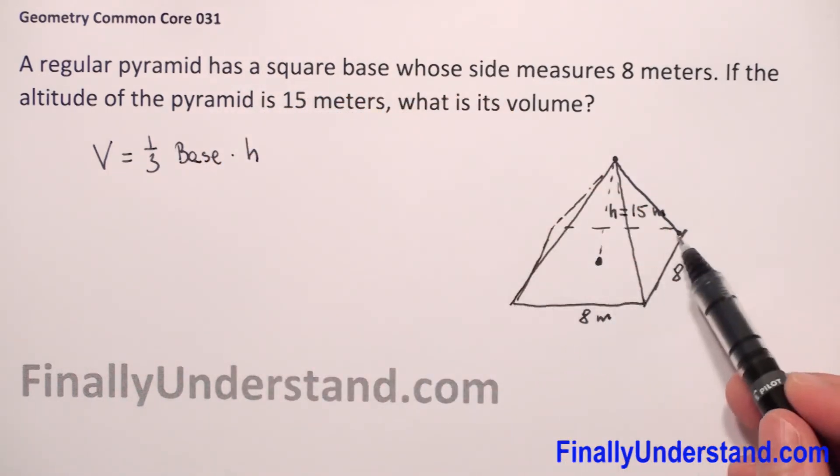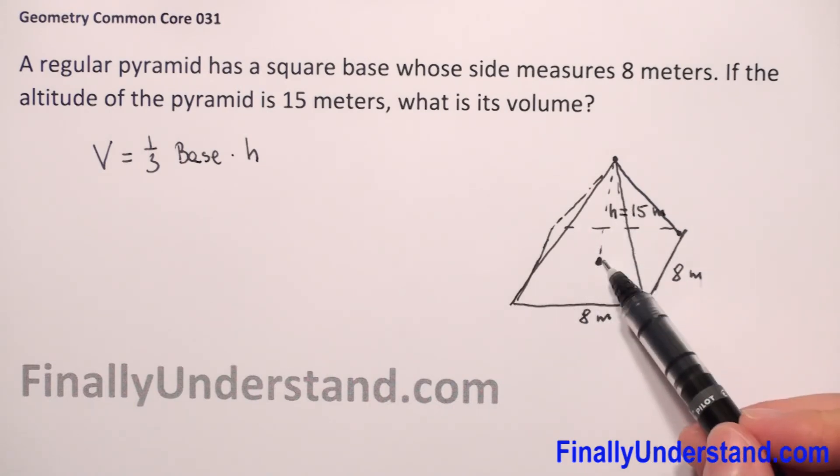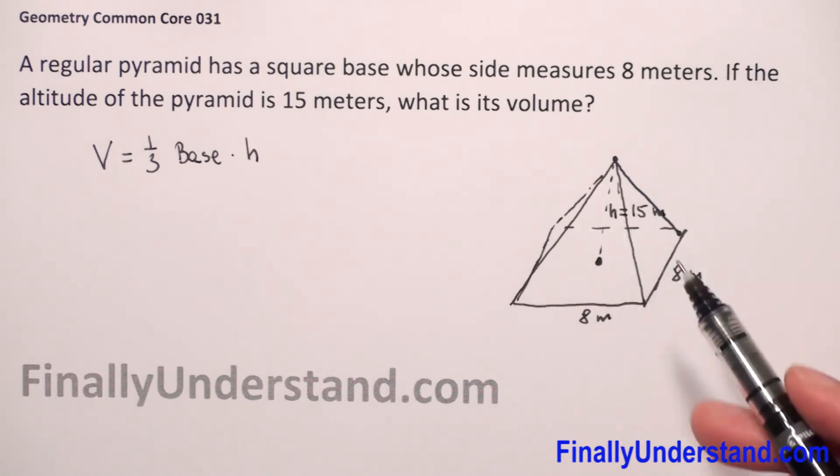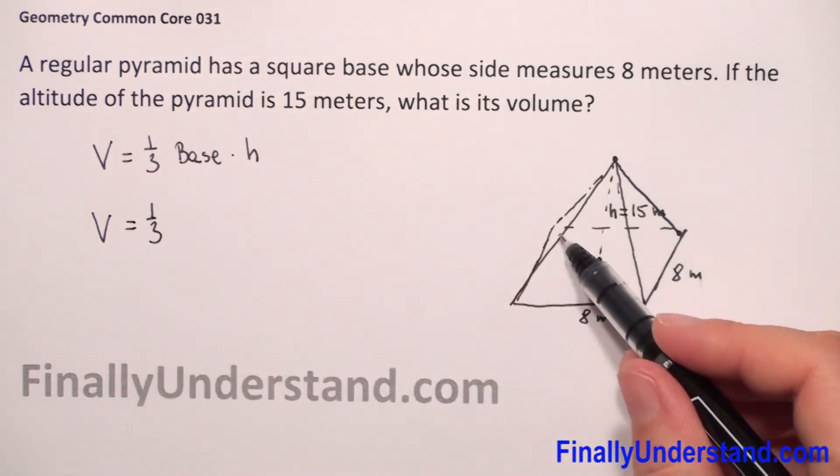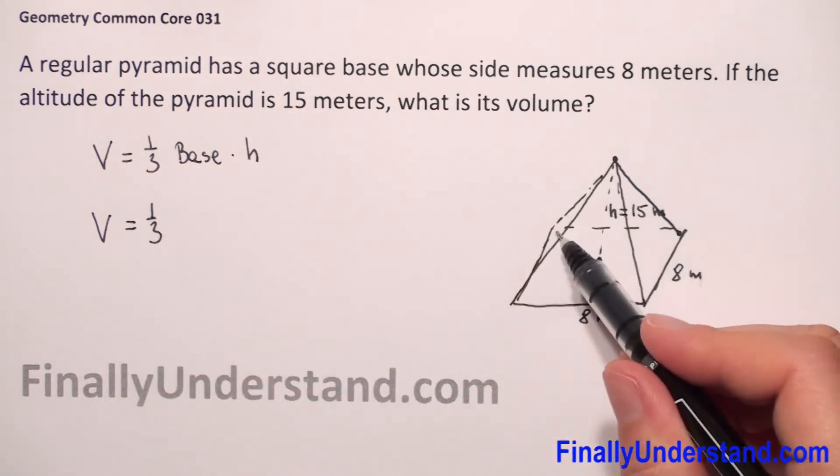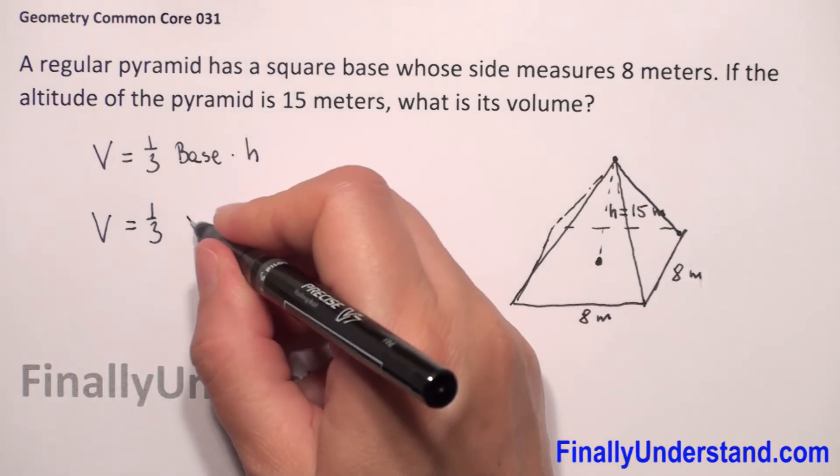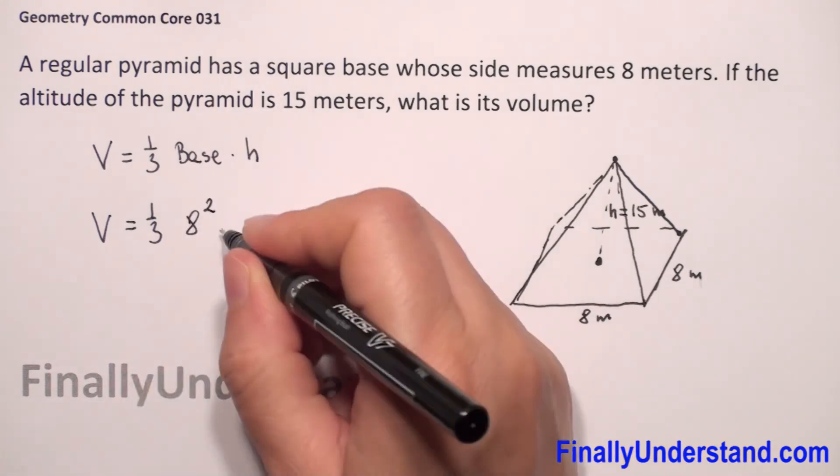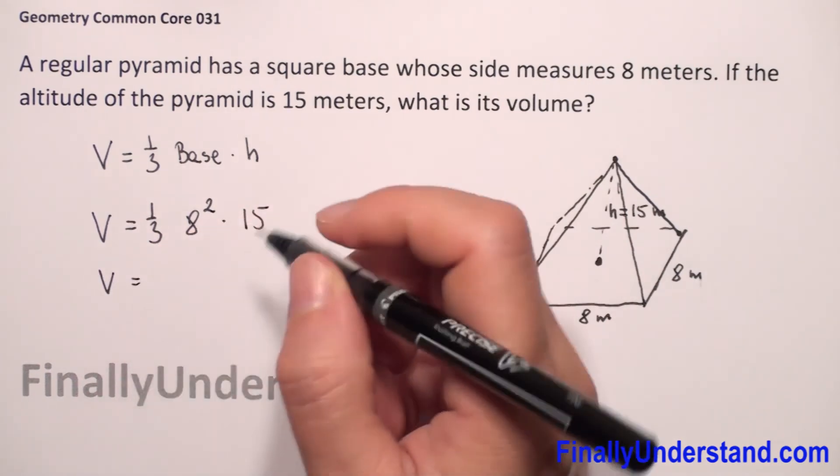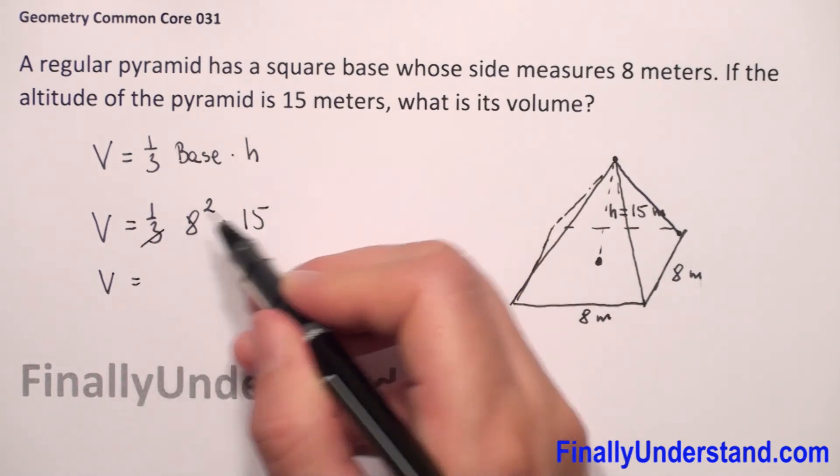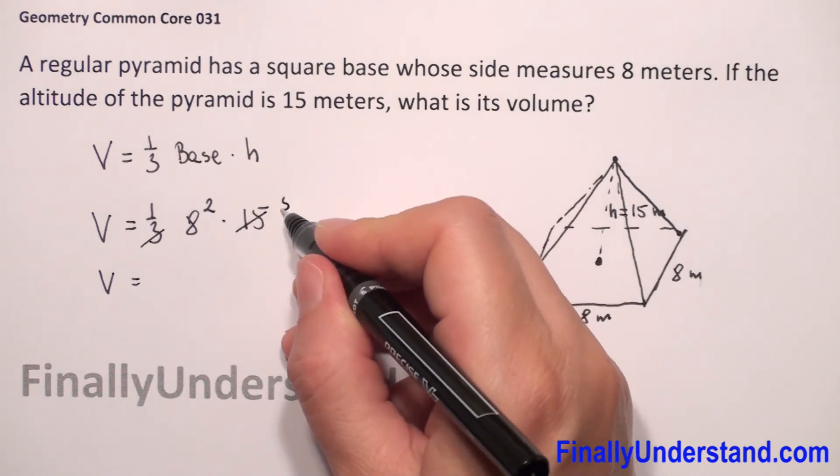So we have to find the base only because we have given the height. The base is square, so one third times area of the square, which is 8 to the second power, times height 15. Volume is 3 and 15, we can reduce so it will be 5.